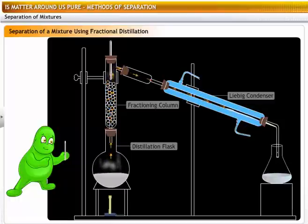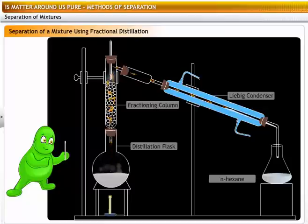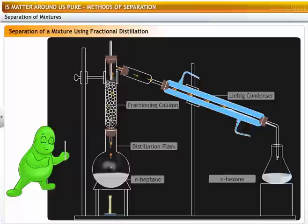During this process, only the vapors of N-hexane, which has a lower boiling point, pass through and get condensed in the condenser. N-heptane, which has a higher boiling point, condenses and flows back into the distillation flask.